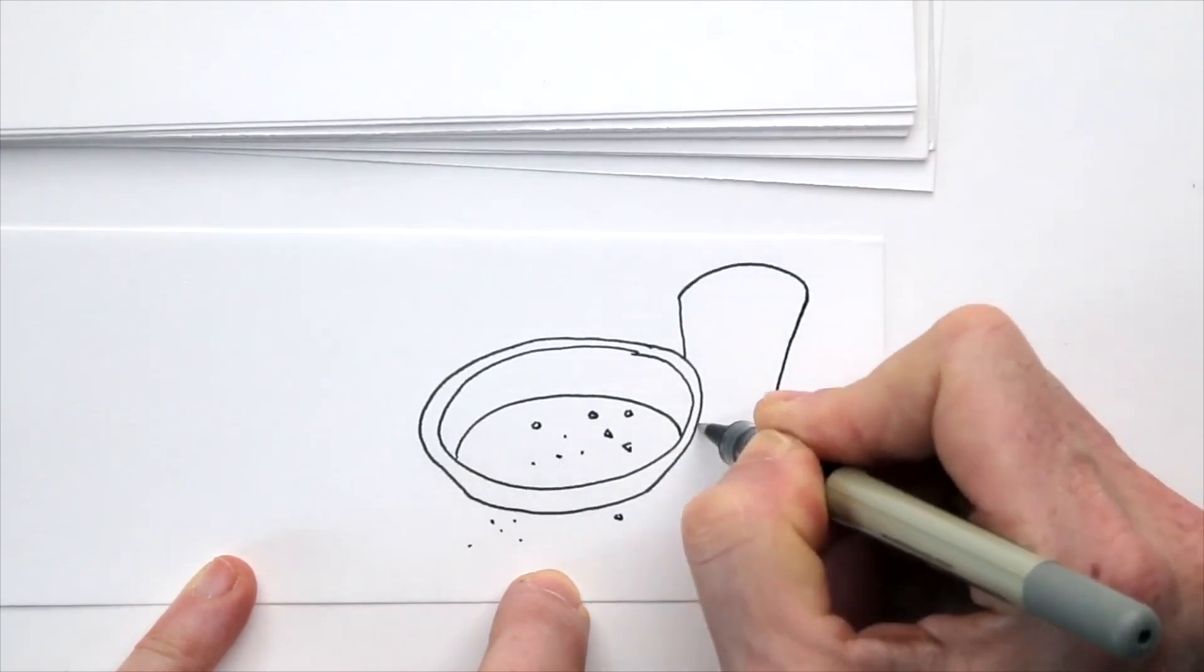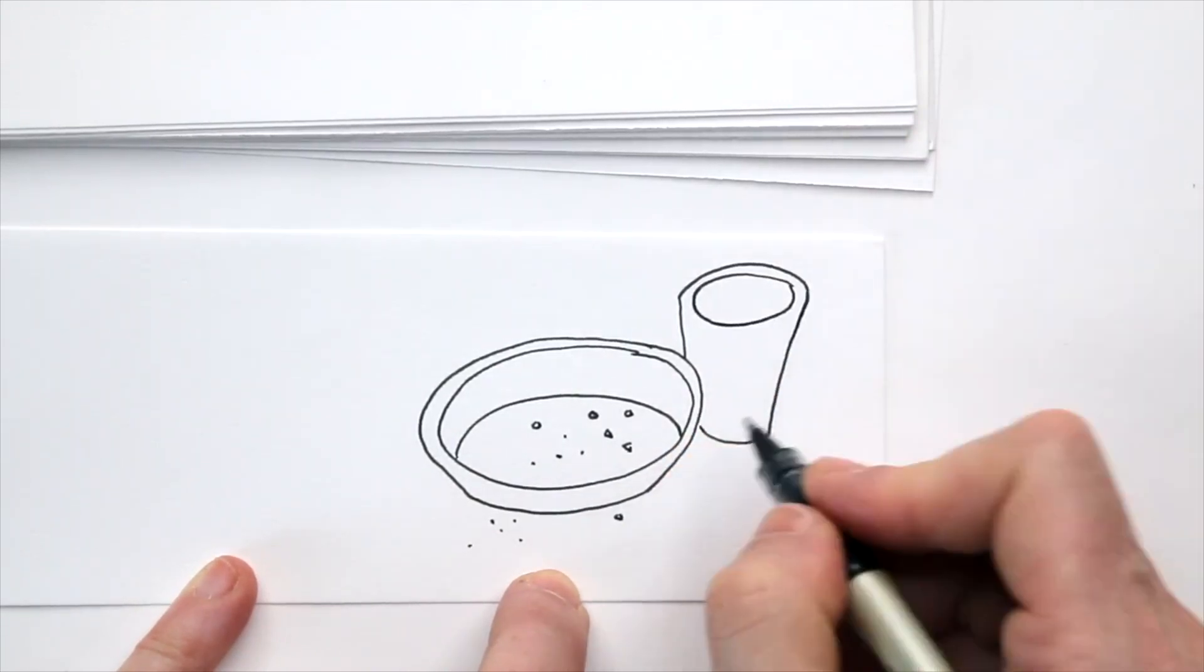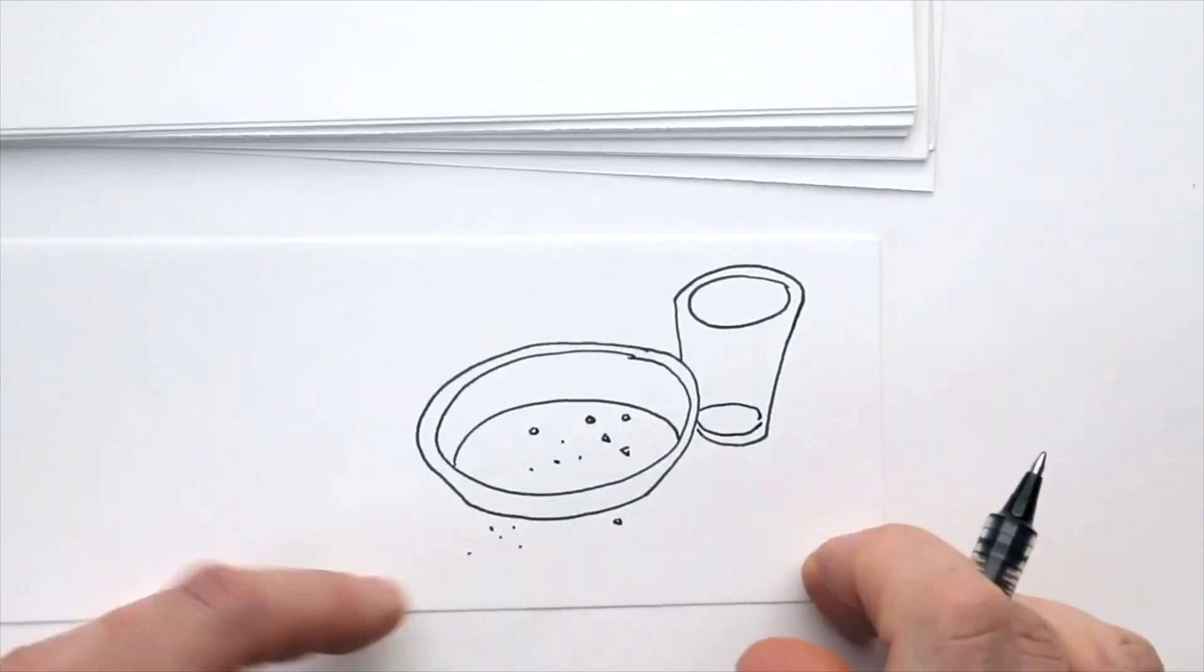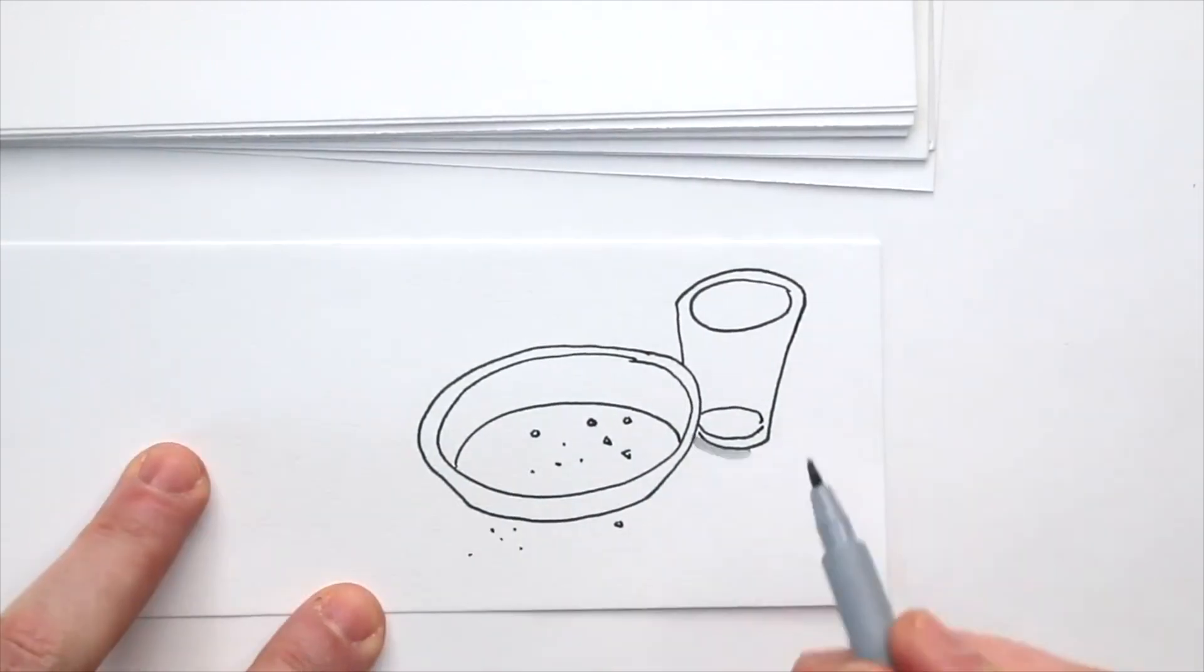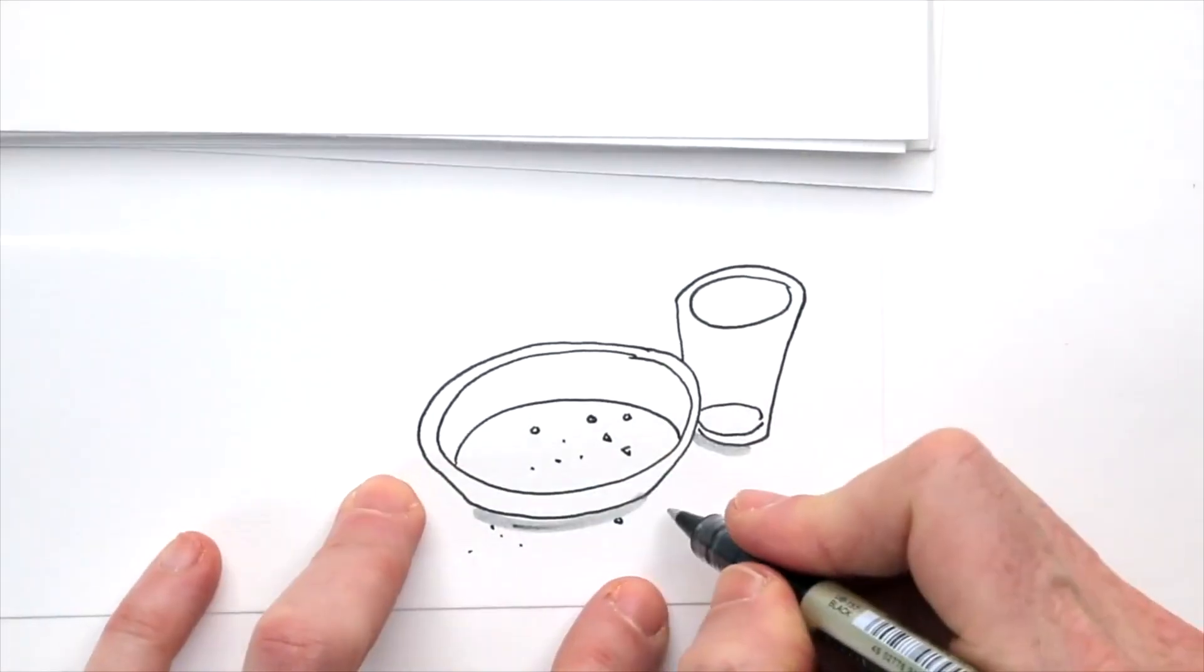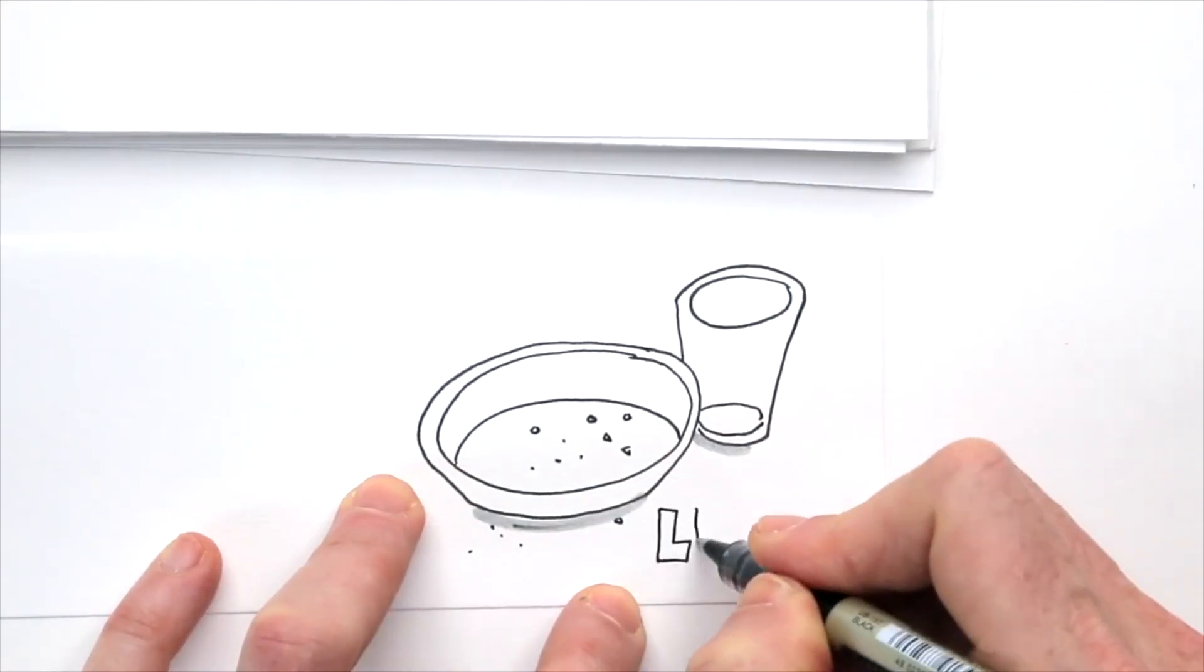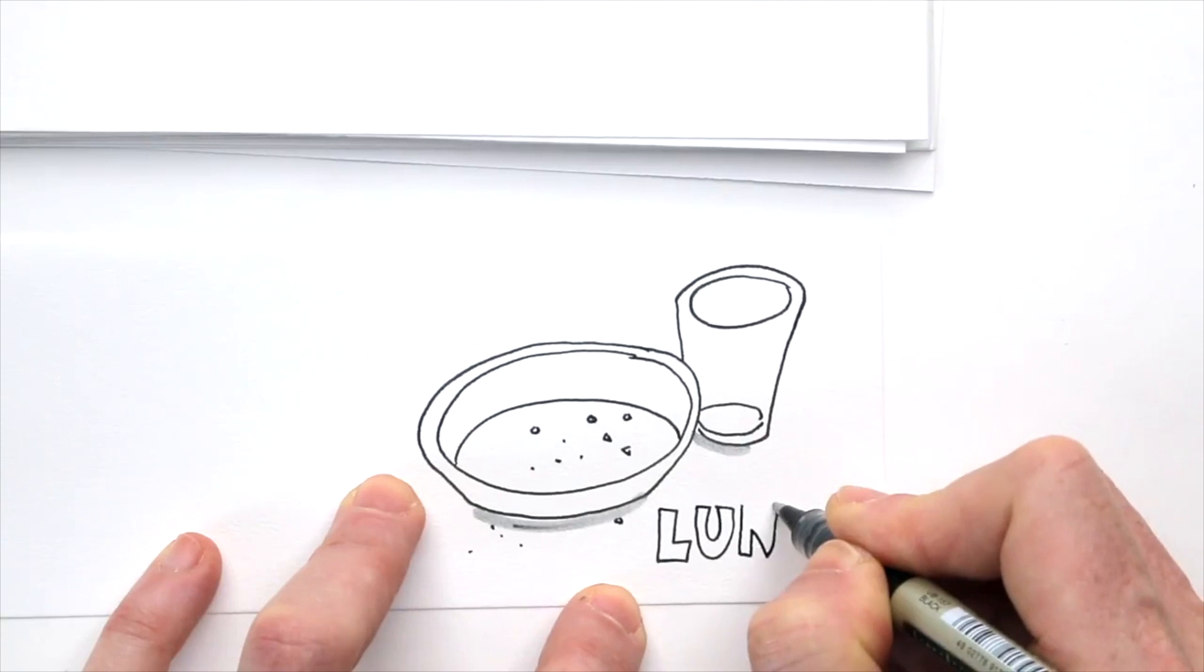I start with the very last frame of my animation. Lunch is gone, apart from just a few crumbs. The glass is empty. With a grey brush pen, I add a little drop shadow. I'll add the word lunch too, just for fun.